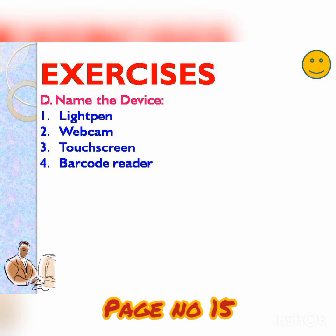Next: name the device. See the questions from the book and write the answers. Number 1: light pen. Number 2: webcam. Number 3: touch screen. And number 4: barcode reader.